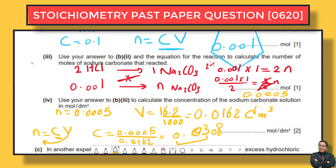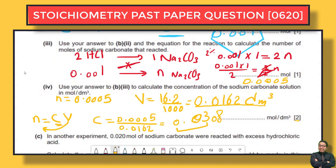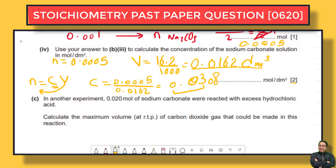Note that converting the volume to dm³ earns you one mark, and writing the correct concentration earns the second mark. Each step gives you a certain mark, so please write all your steps clearly in your answer.